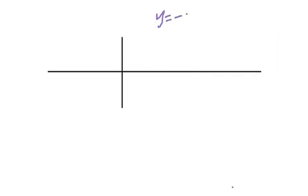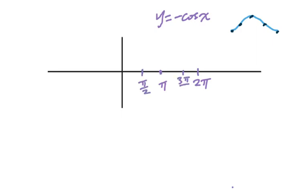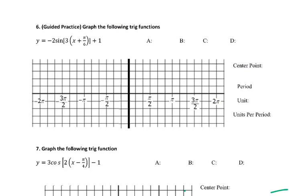For y equals negative cosine x, the graph will be like this. Get started from your minimum. We have five points. We still label two pi, pi, pi over two, three pi over two. We got one and negative one. This time we get started from minimum, then going up. So we can connect these five points. That's the graph. Let's go to guided practice.